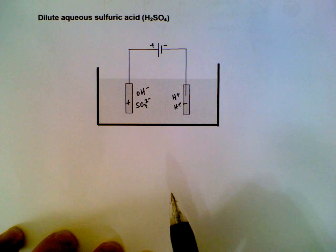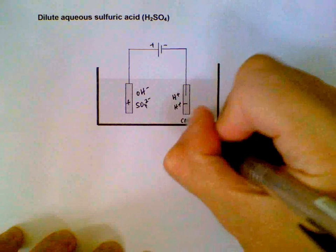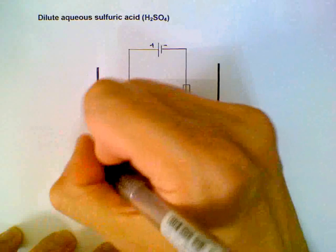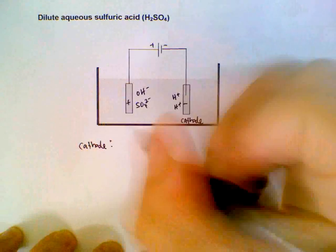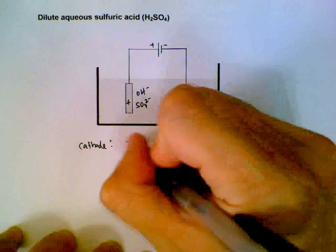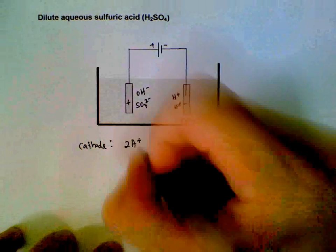Preferential discharge - we look at the cathode. At the cathode, there's only positive ions being hydrogen ions, so it's an easy decision. Hydrogen ions will be reduced to hydrogen gas.